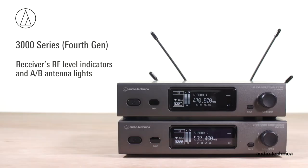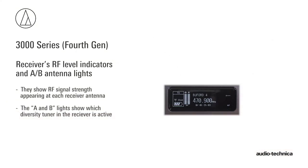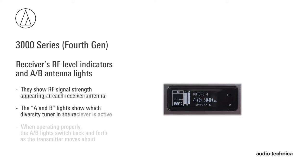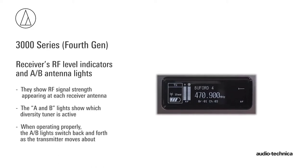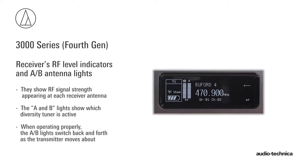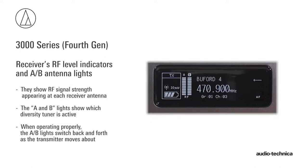On the receiver display's left side are the RF level indicators along with A and B antenna lights. These show the RF signal strength and which diversity tuner, A or B, is active. When operating properly, the A and B lights switch back and forth as the transmitter moves about.